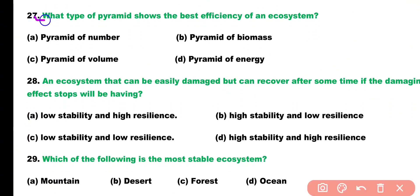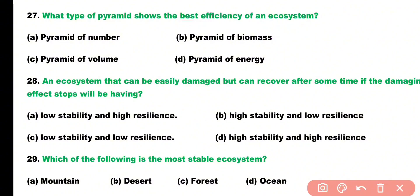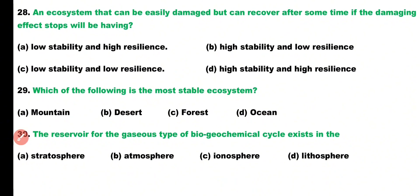Question number twenty-seven. What type of pyramid shows the best efficiency of an ecosystem? Options: pyramid of number, pyramid of biomass, pyramid of volume, or pyramid of energy? Correct answer is option A. The best efficiency of an ecosystem is shown by the pyramid of biomass.